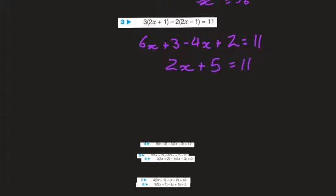Subtracting 5 from both sides: 2x is equal to 6, and therefore x is equal to 3, dividing both sides by 2.